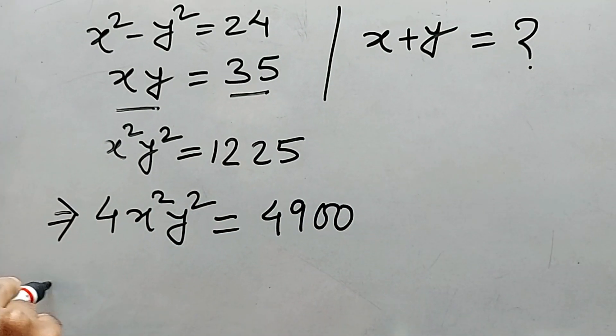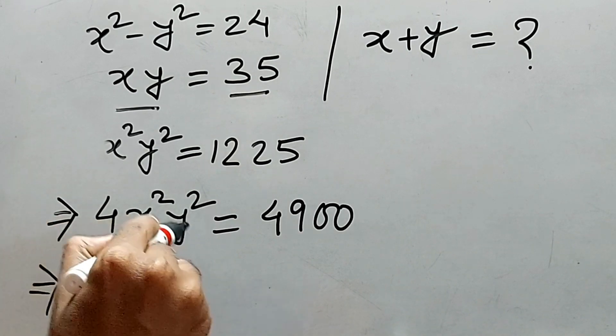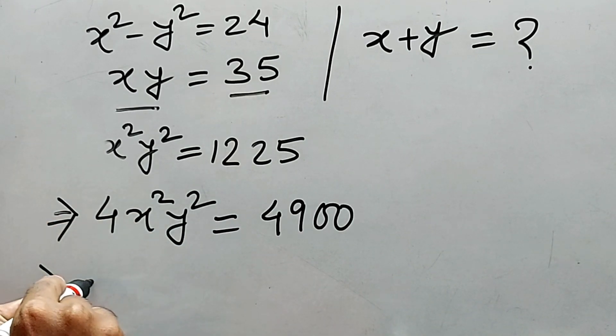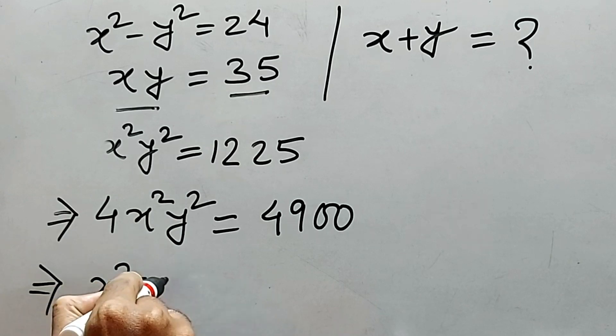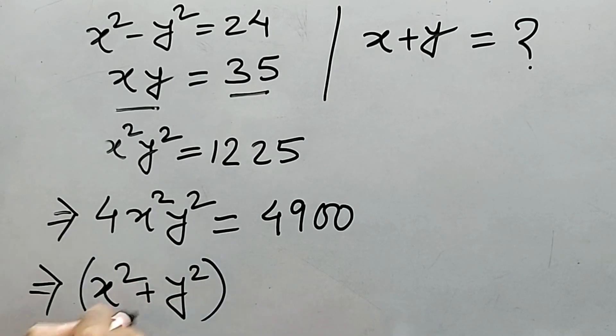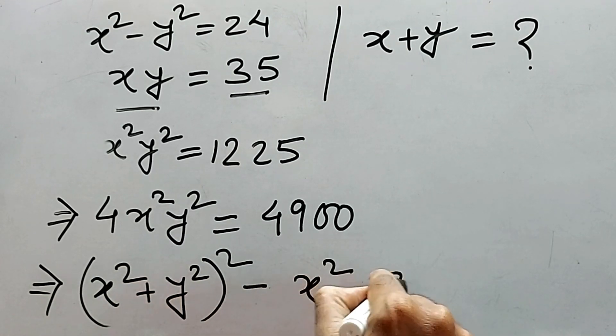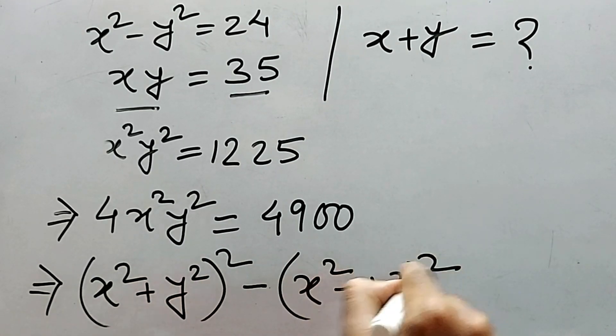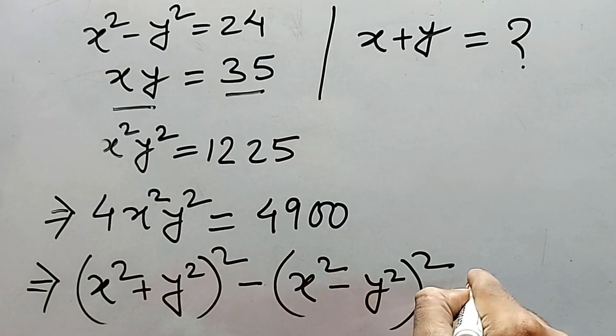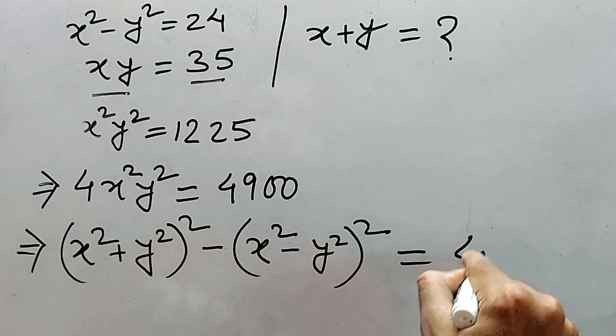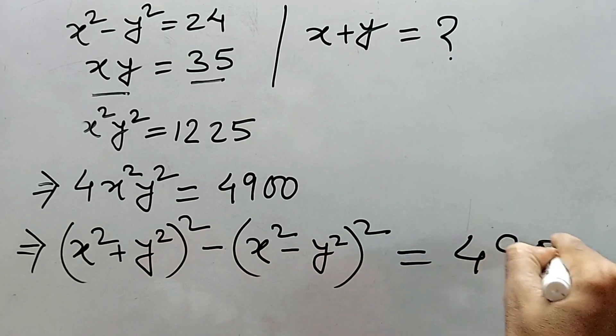Now we know the formula of 4ab. That is a plus b whole square minus a minus b whole square, right? So this one is equal to 4, 9, double zero.